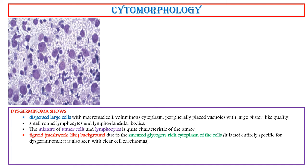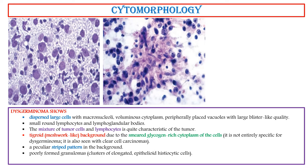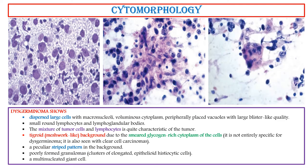The tigroid background is also seen with clear cell carcinomas. A peculiar stripe pattern may be present in the background. Poorly formed granulomas, clusters of elongated epithelioid histiocytic cells, and multinucleated giant cells may also be observed.